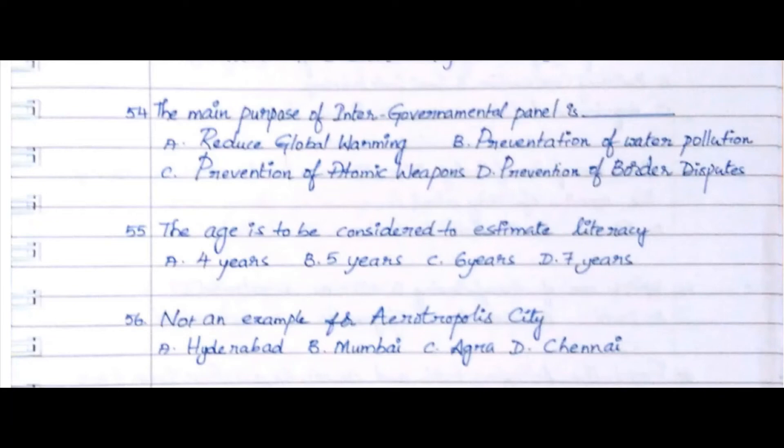Question 55: The age to be considered to estimate literacy. Option A. Four years, Option B. Five years, Option C. Six years, Option D. Seven years. The answer is Seven years.